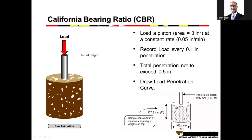The test uses a cylindrical specimen made of the material — it can be subgrade soil, crushed base, or subbase. The material must pass the No. 4 sieve, meaning material larger than No. 4 sieve size is not used for making the CBR specimen. The material may be from the subgrade, subbase, or base layer.